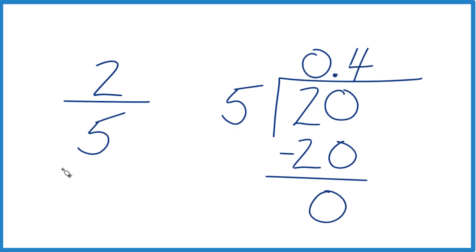So two-fifths as a decimal is 0.4, and this is accurate. So in essence, we don't need to round 0.4. This is the exact value when you change two-fifths to a decimal.